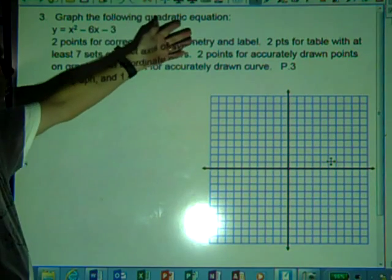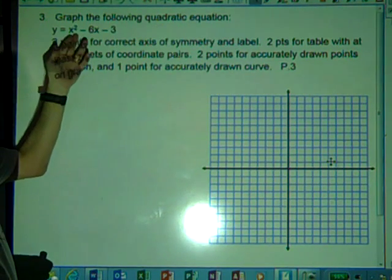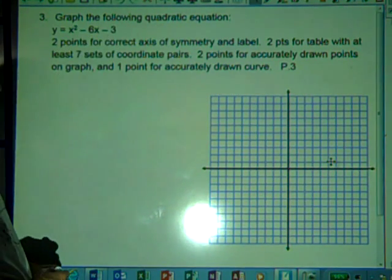Problem number three, graph the following quadratic equation, y equals x squared minus 6x minus 3.